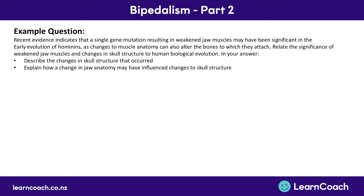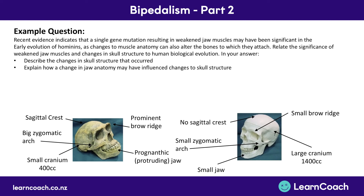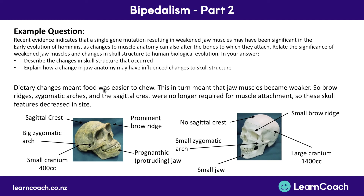Next, you'll need to explain how that change in jaw anatomy may have influenced changes to the whole skull. We need to explain — not just describe — why eating different food led to all of these changes. We changed our diet so that the food was easier to chew, which is why we have a smaller jaw. In turn, the jaw muscles became weaker because it's easier to chew the food. So all of those protrusions — the brow ridges, the zygomatic arches, and the sagittal crest — are no longer required for muscle attachment. Therefore the bone protrusions decrease in size, and that's why we have the differences we've seen. So we've gone one step further than just describing: we've also explained why those features were there.